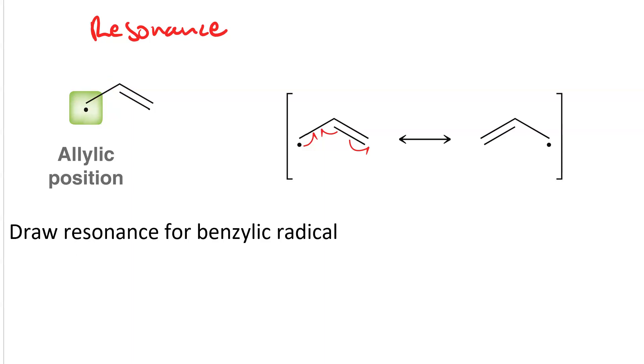And you need three fish hook arrows to perform the resonance. The radical combines with one of the electrons from the pi bond to make a new pi bond. The other electron from the original pi bond becomes the new radical.